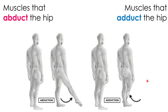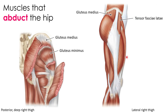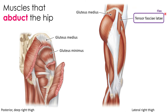For hip abduction, the key muscles are found deep to the gluteus maximus. The gluteus medius lies below it, and the gluteus minimus is underneath that. These two muscles have parallel fibers, indicating very similar actions. The tensor fasciae latae is also an abductor — and notably it has already been mentioned as a flexor, so it both flexes and abducts the hip.